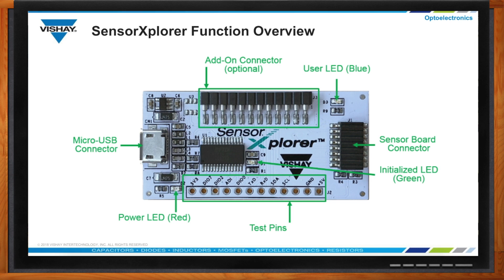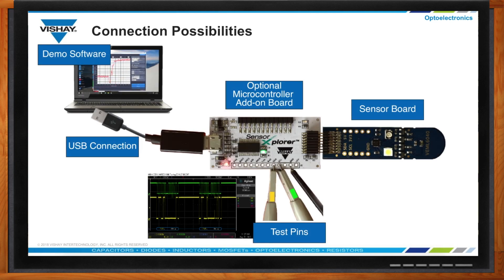To walk through the setup flow: you buy a sensor explorer and also select a specific product. That product will have a sensor board. You attach the sensor board to the sensor explorer via the provided connector, download the software, and connect the sensor explorer via USB to the PC. With the software, you start analyzing what kind of data you're getting, playing with settings — everything in the application note is featured in the software module. Then to design the part into your application, you might attach an oscilloscope, see what data is being sent, correlate that to the data sheet, and go from there.